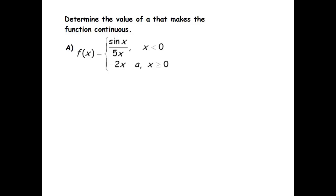So I've got f(x) equals sin(x) over 5x, and that's for when x is less than zero. When x is greater than or equal to zero, it's -2x minus a. We've got to figure out what a should be in order for this function to be continuous.